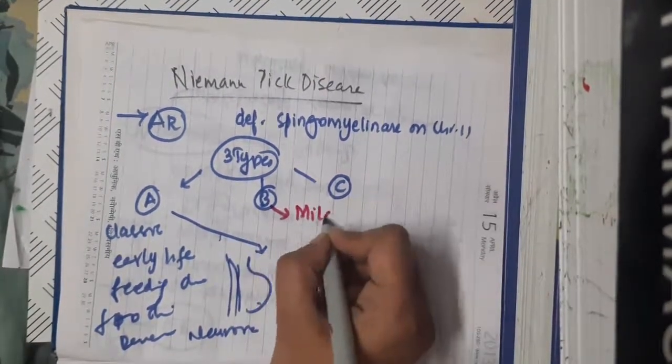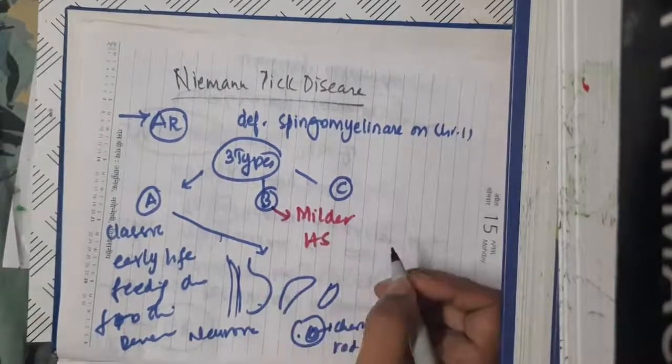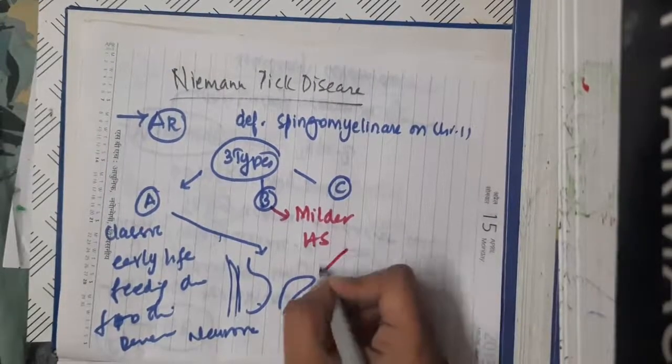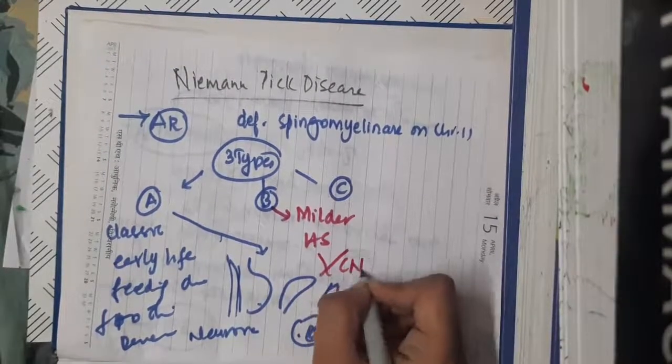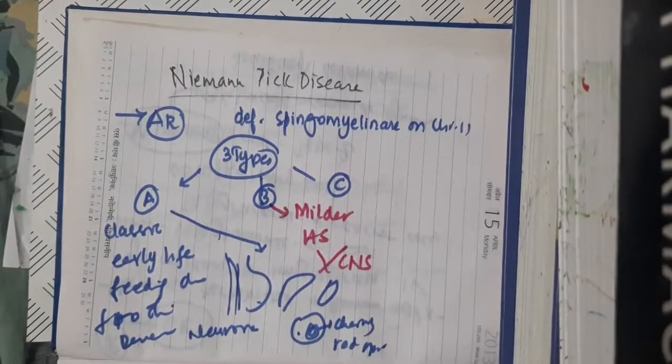Type B is a milder disease with only hepatosplenomegaly. There is no neurological involvement.